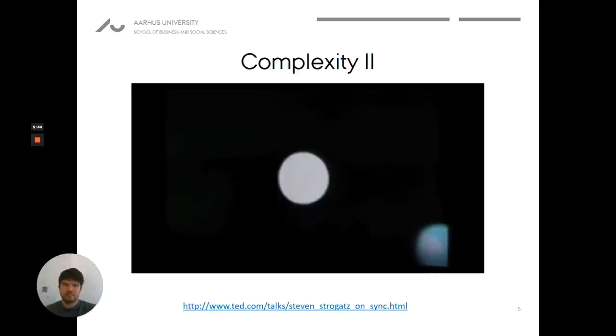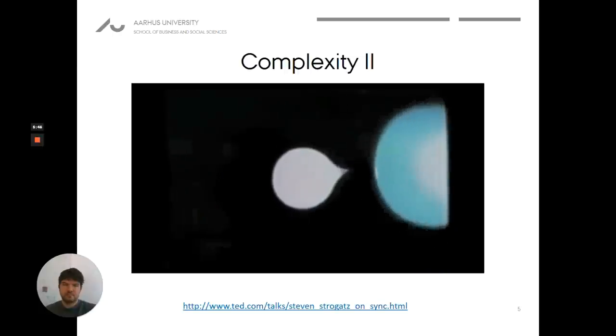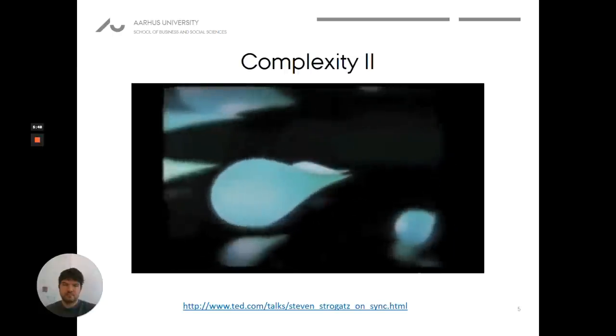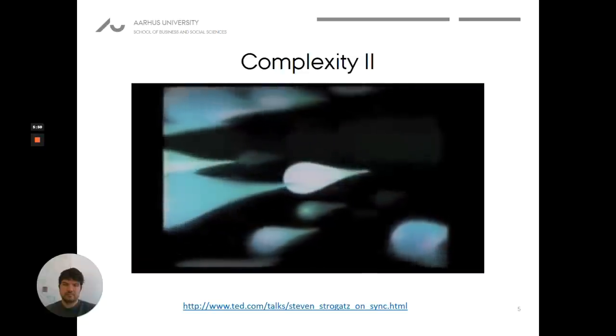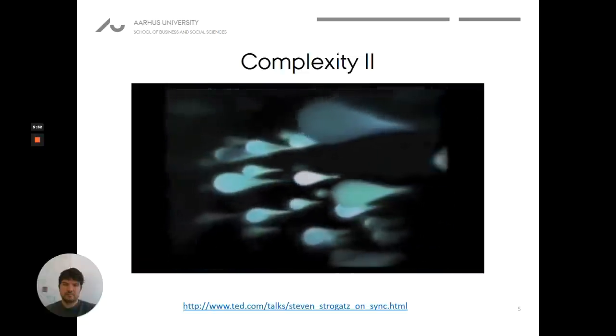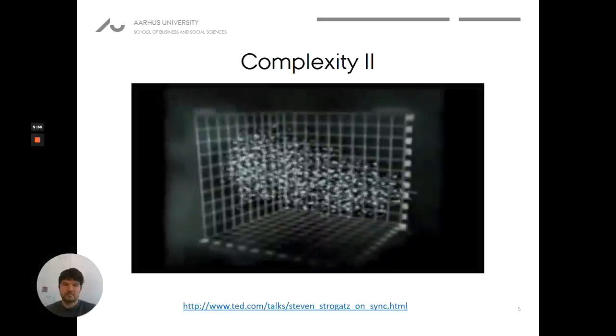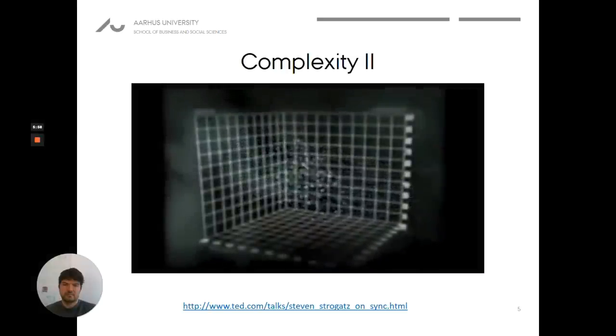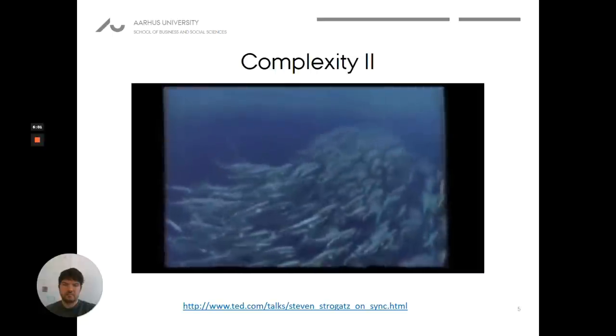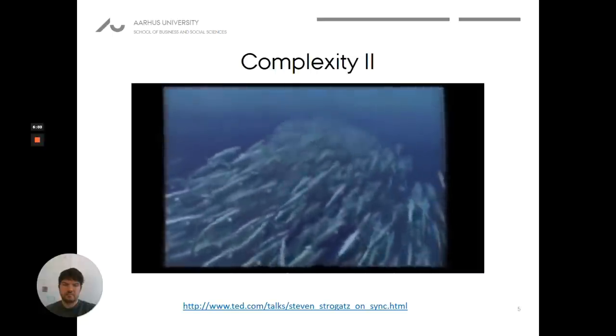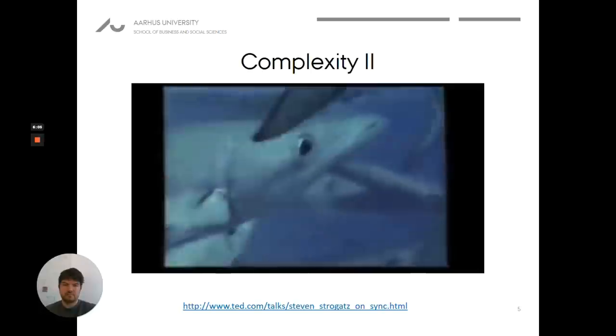First, all the individuals are only aware of their nearest neighbors. Second, all the individuals have a tendency to line up. And third, they're all attracted to each other but they try to keep a small distance apart. When you build those three rules in, automatically you start to see swarms that look very much like fish schools or bird flocks.